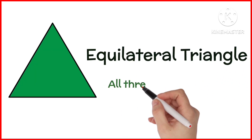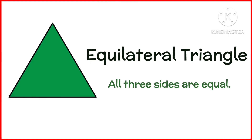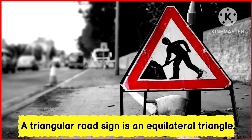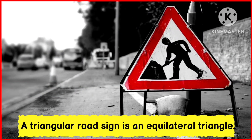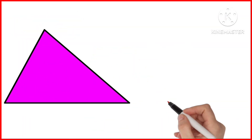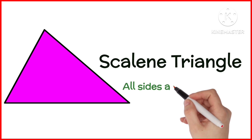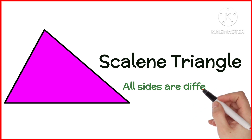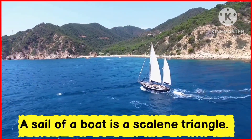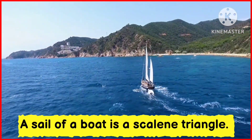Equilateral Triangle. All three sides are equal in this triangle. A triangular road sign is an equilateral triangle. Scalene Triangle. All sides are different. A sail of a boat is a scalene triangle.